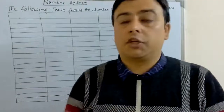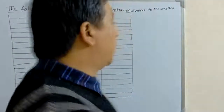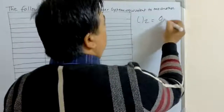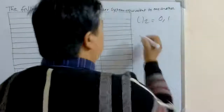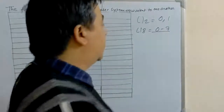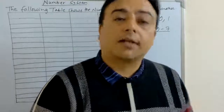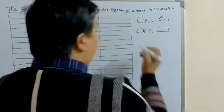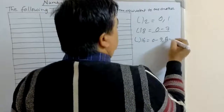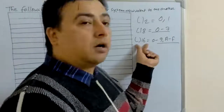If the base is 2, the number system is the binary number system. In binary, the base or radix is 2, meaning it uses only 0 and 1. If the radix is 8, it means digits 0 to 7 — there are 8 digits. If the base is 8, that number system is known as the octal number system. If the base is 16, it uses 0 to 9 as well as A to F, which is also known as the hexadecimal number system.